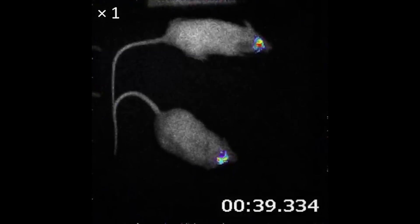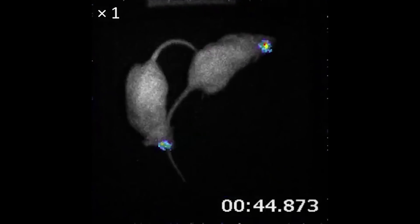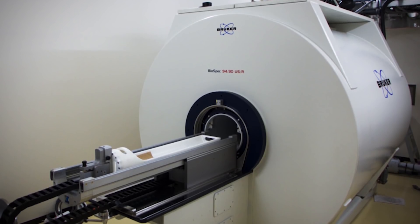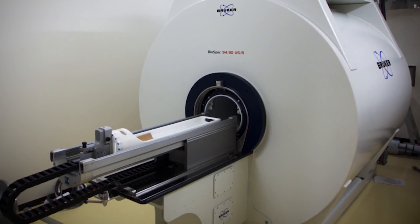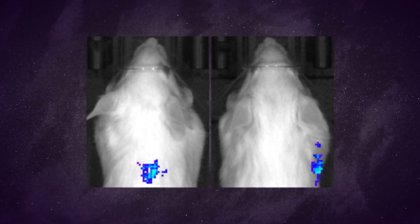These improvements allowed the detection of cells in living animals much deeper inside the animal and with more precision. Using a camera sensitive to near-infrared light, researchers were able to detect single transplanted tumor cells in the lung of a living mouse,